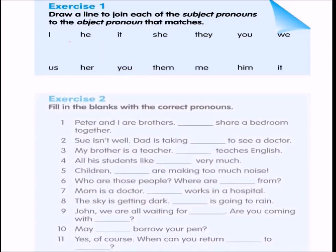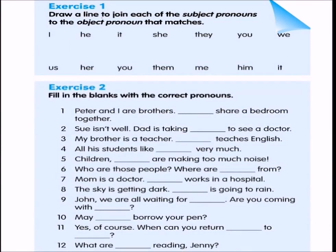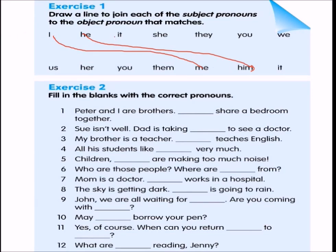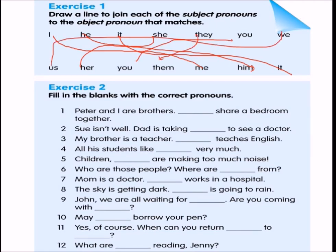Exercise 1: Draw a line to join each subject pronoun to the matching object pronoun. I matches me; he matches him; it stays it; she matches her; they matches them; you stays you; we matches us.